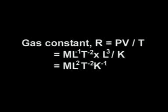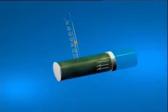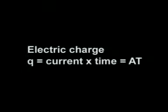Gas constant: R = PV/T = (M·L⁻¹·T⁻²·L³)/K = M·L²·T⁻²·K⁻¹. Electric charge: Q = current × time = A·T.